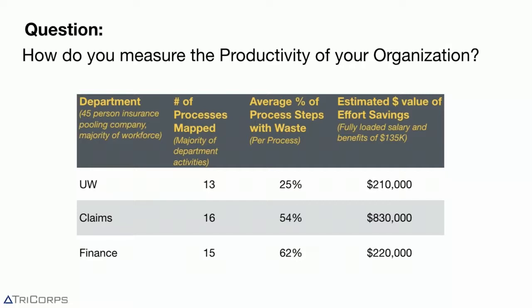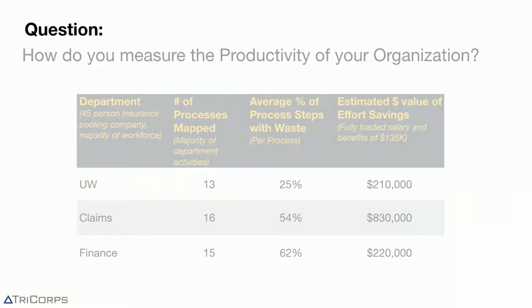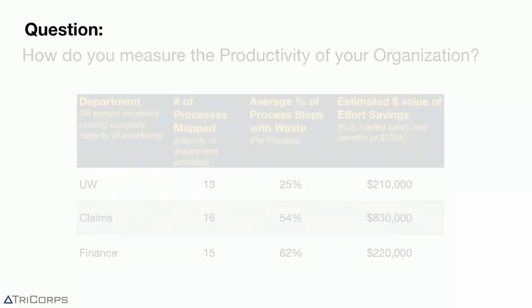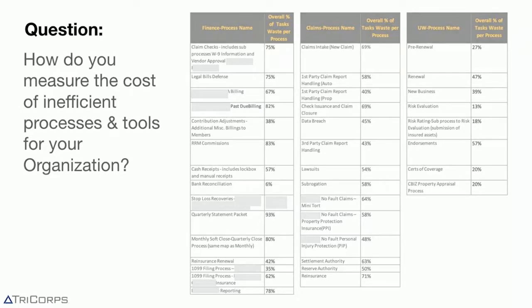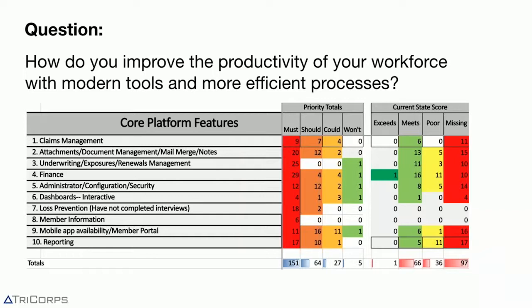In this particular risk pool example, we looked at each key process — claims intake, claims checks, and others — and calculated for all the steps what percent had waste. Some really big numbers emerged. That exercise fed right into a vendor selection and made it apparent they needed to move from one platform to another. When you do a platform selection, you typically create a scoring matrix — 10 high-level buckets with features prioritized across teams. We also scored the current state, and from their waste walks they identified 150 must-have requirements. They found their current vendor was missing about 100 of them — a huge gap they didn't really have visibility into. They knew there were pain points, but until they did this level of analysis, they didn't really understand how much pain there was.